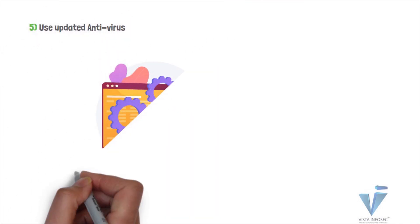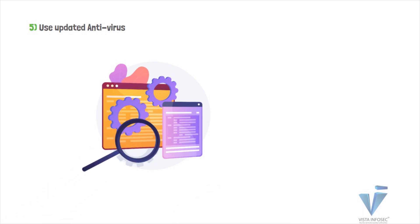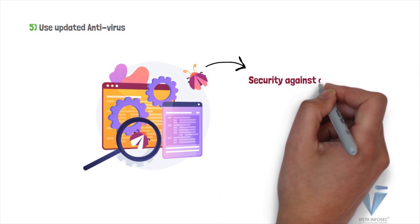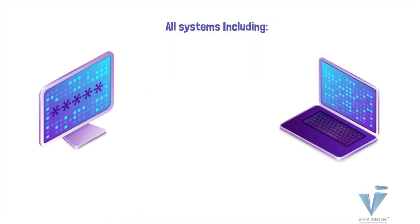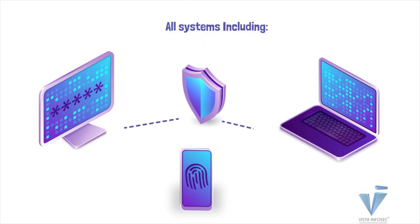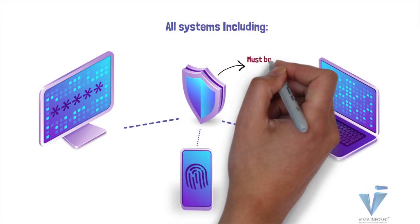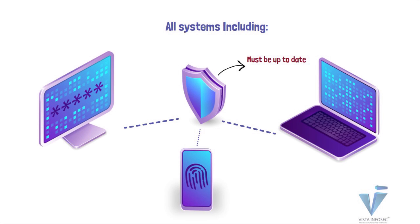Requirement 5, which is to use and regularly update antivirus software or programs, basically requires an organization to focus on security against all types of malware. All systems, including workstations, laptops, and mobile devices that employees use for accessing critical systems both locally and remotely, must have an antivirus solution deployed on them. Organizations need to also ensure that the antivirus or anti-malware programs are updated on a regular basis to detect known malware. This also ensures that antivirus mechanisms are always active, use the latest signatures, and generate auditable logs.